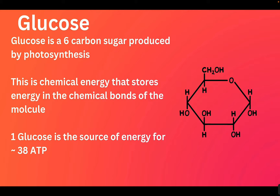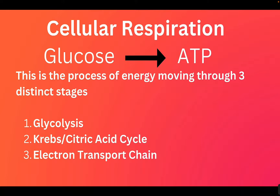From one single glucose, we're going to produce around 38 ATP molecules. All of the energy in the bonds of one glucose is equivalent to all of the energy in 38 ATP molecules. That brings us to the definition of cellular respiration, which is basically how we get from one glucose to 38 ATPs, and it needs to go through three stages to make our final product.